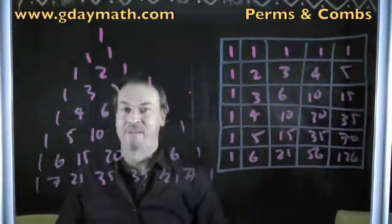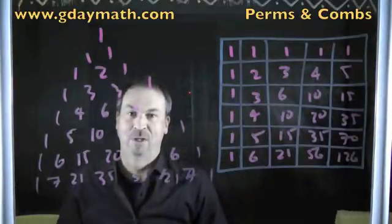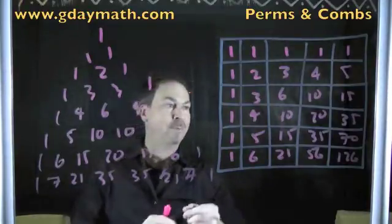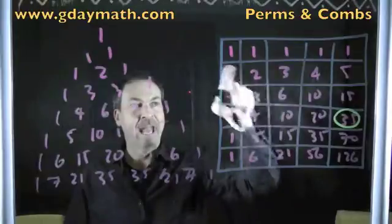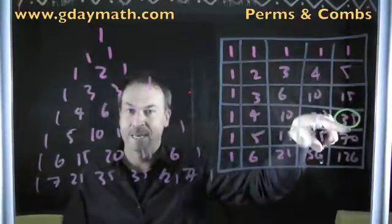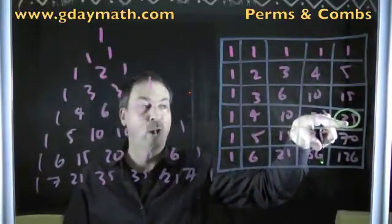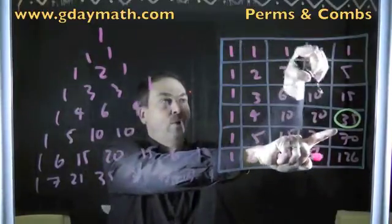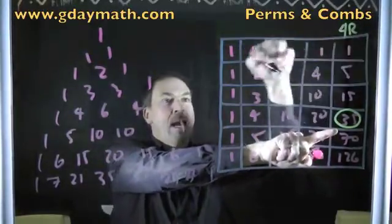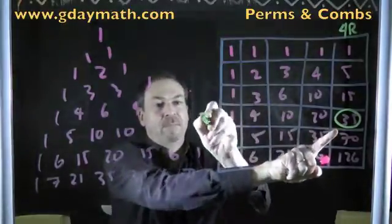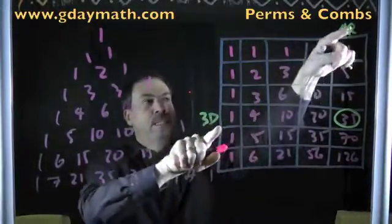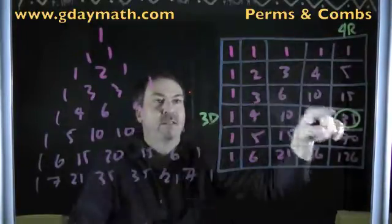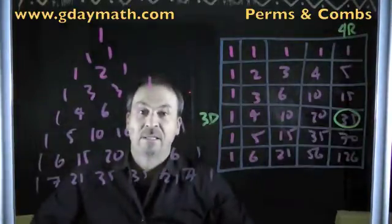But we actually know more about this grid of numbers than just that geometric feature. We actually have a formula for each entry in this particular cell. For example, this 35 counts the number of paths from the start to that ending position. Which is really a bunch of right steps and down steps. In fact, this is 1, 2, 3, 4 right steps, and 0, 1, 2, 3 down steps. So, all the words consisting of 7 letters, which are 4 R's and 3 D's, gives me all the paths from start to end, and it turns out that's 35 ways.